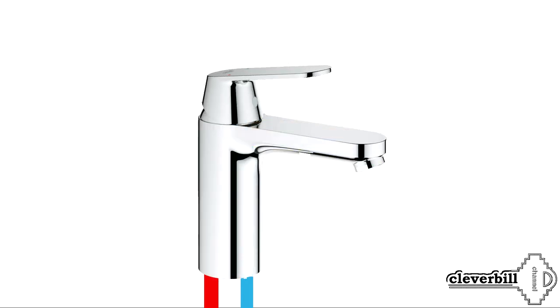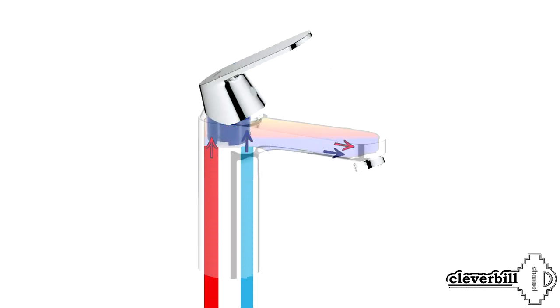Now consider the operation of the mixer with a clogged aerator. When the mixer is turned on, flows of hot and cold water falling into the body of the tap are mixed, heading to the spout of the mixer, where at the end they encounter resistance in the form of a clogged aerator. The mixed water, with difficulty and not in full, passes through the clogged aerator, and at the exit, we see a weak stream of water.